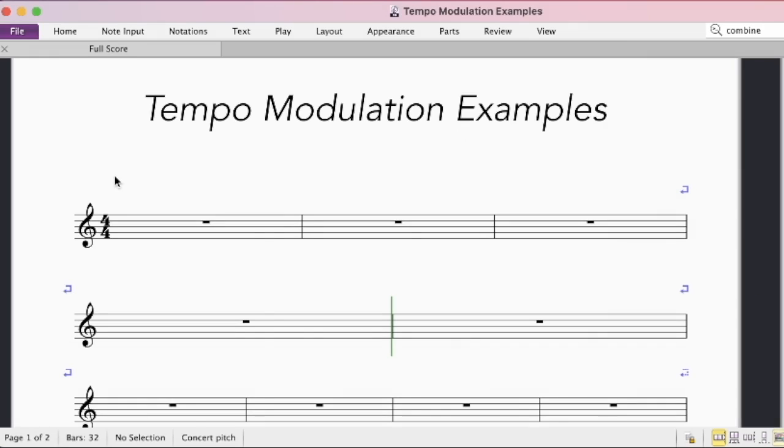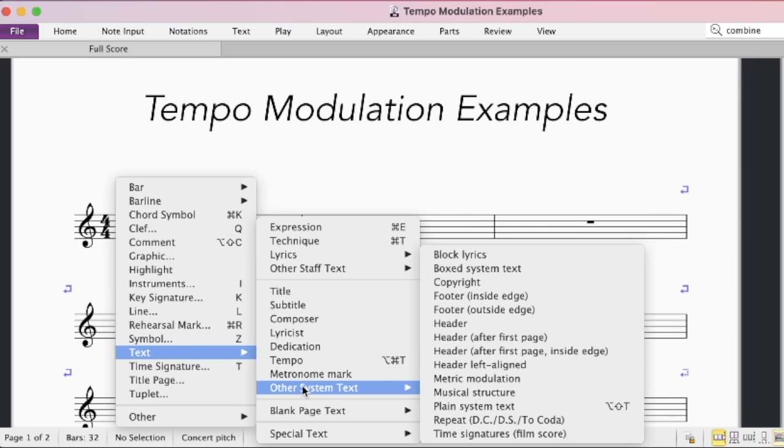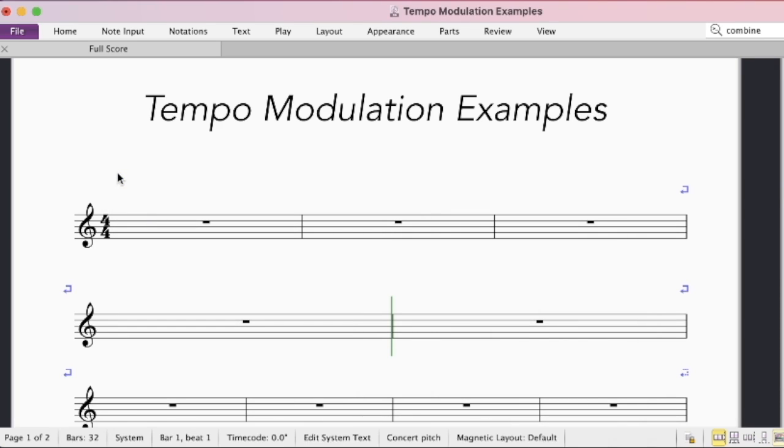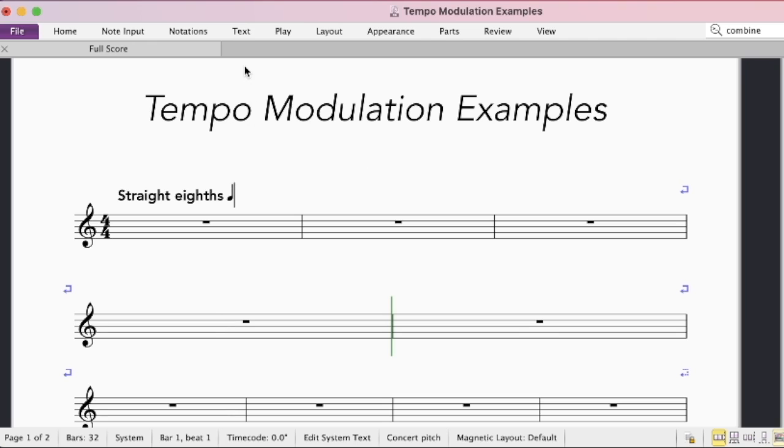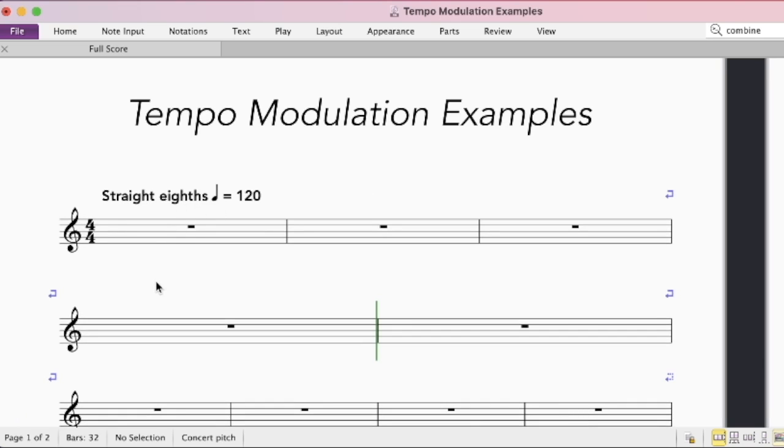So we're going to start with something that is a quarter note equals 120 and add some notes in. I'm going to start by adding some text. I'm clicking text and then tempo, clicking the bar where I want it to start, typing in some text to talk about feel—straight eighths—and then I'm going to right-click or two-finger click on Mac and select this quarter note space equals 120. And that's great if you forgot to enter this text when you started creating the file and you want to add in a tempo at any point, you can always do that.